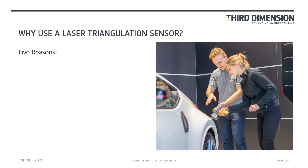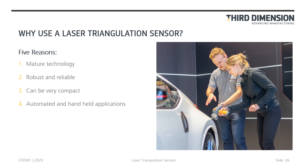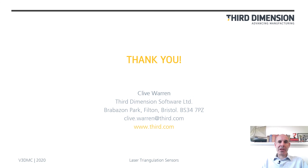And now, five reasons why you might want to use a laser triangulation sensor. Number one: they are a mature technology that has been tested and refined over the years. Number two: they are robust and reliable. Number three: the design enables them to be made very compact. Number four: this compactness makes them ideally suited to both automated and handheld applications in manufacturing. Number five: they are equally well suited to inline and offline applications. Thank you for viewing the presentation, and if you require any further information, please don't hesitate to get in touch.